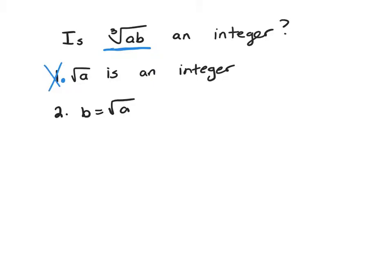Clue 2 may work. Let's square both sides. That's a legal thing to do. That gives me b squared equals - when you square a square root, you get what's underneath the radical. So that's just a.